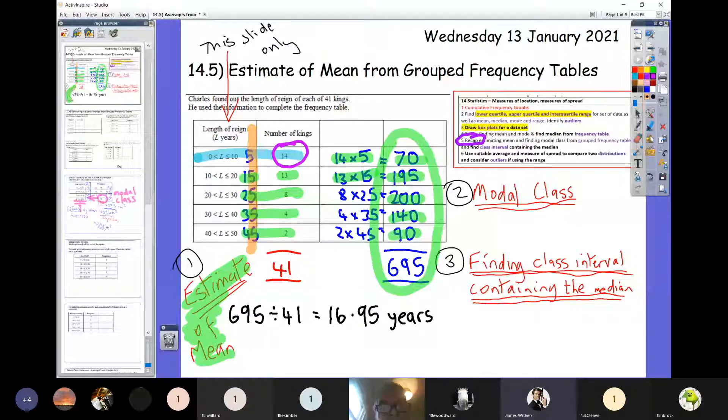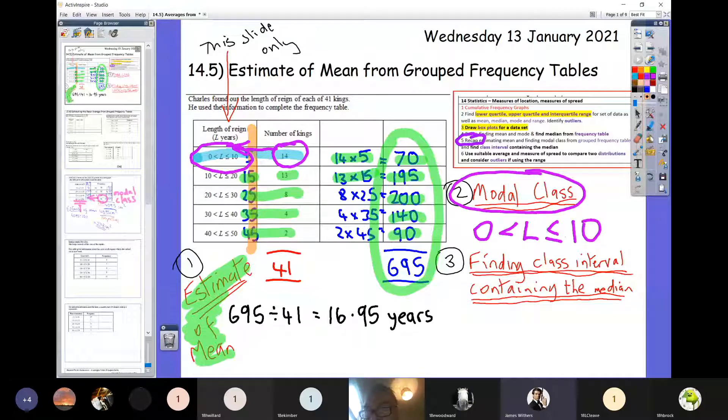Now how long did they reign for? This is now called the modal class. So just like yesterday, you look across to the left hand column, but you then absolutely copy that down exactly. Don't make the mistake of going for that 5 in the middle. The modal class is going to copy out exactly as they've done it in that column. That's just inequality signs telling you that the length of reign was greater than 0 years or less than or equal to 10 years. The key bit you've got to remember is just copy out whatever is in that left hand column exactly if they ask for the modal class. So number one we worked out the estimate of the mean in green at the bottom left. Number two we've just worked out the modal class, the most.